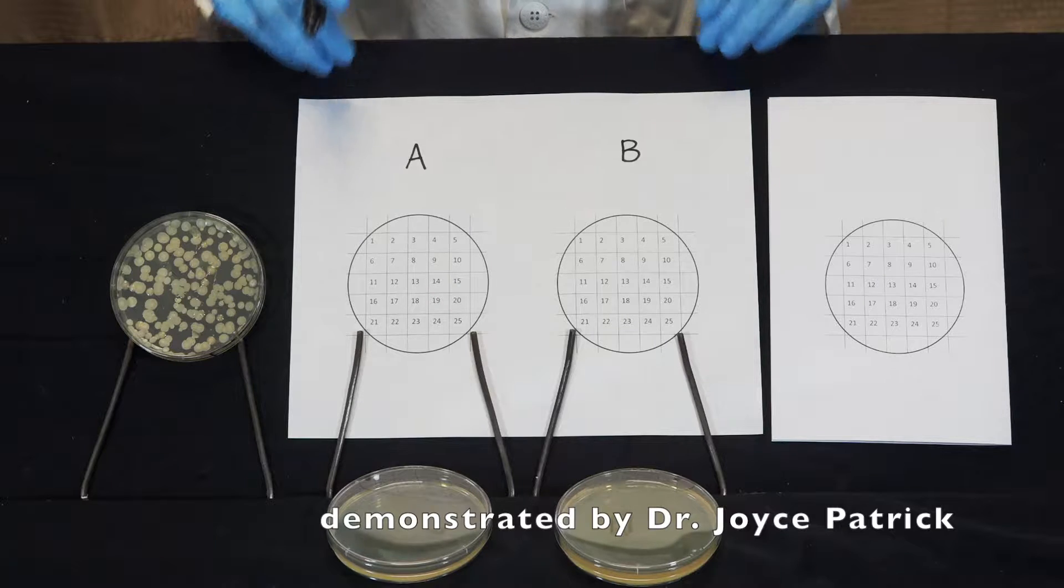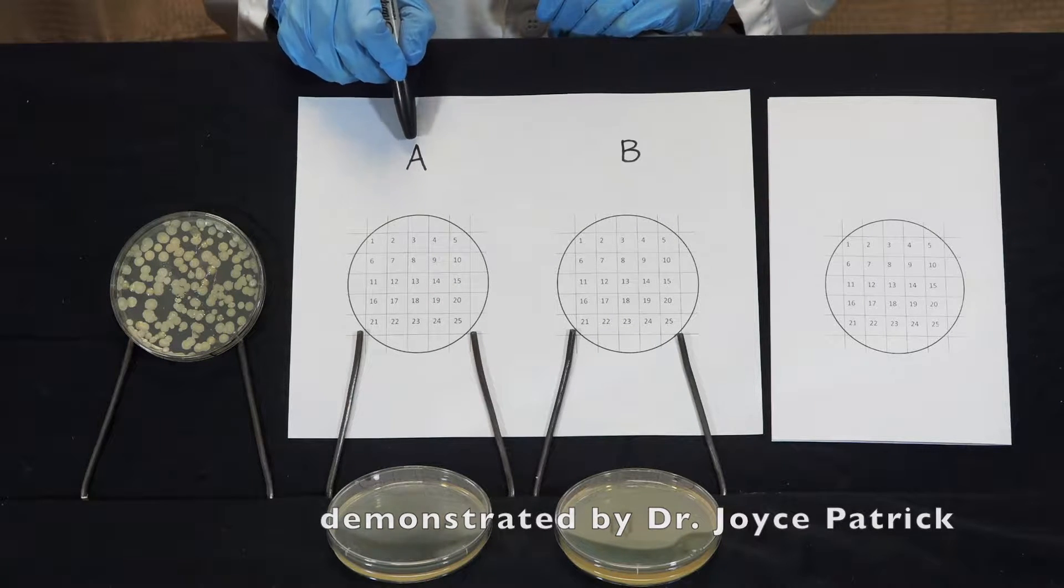This is our replica plating grid. We have space for two plates, plate A and plate B.